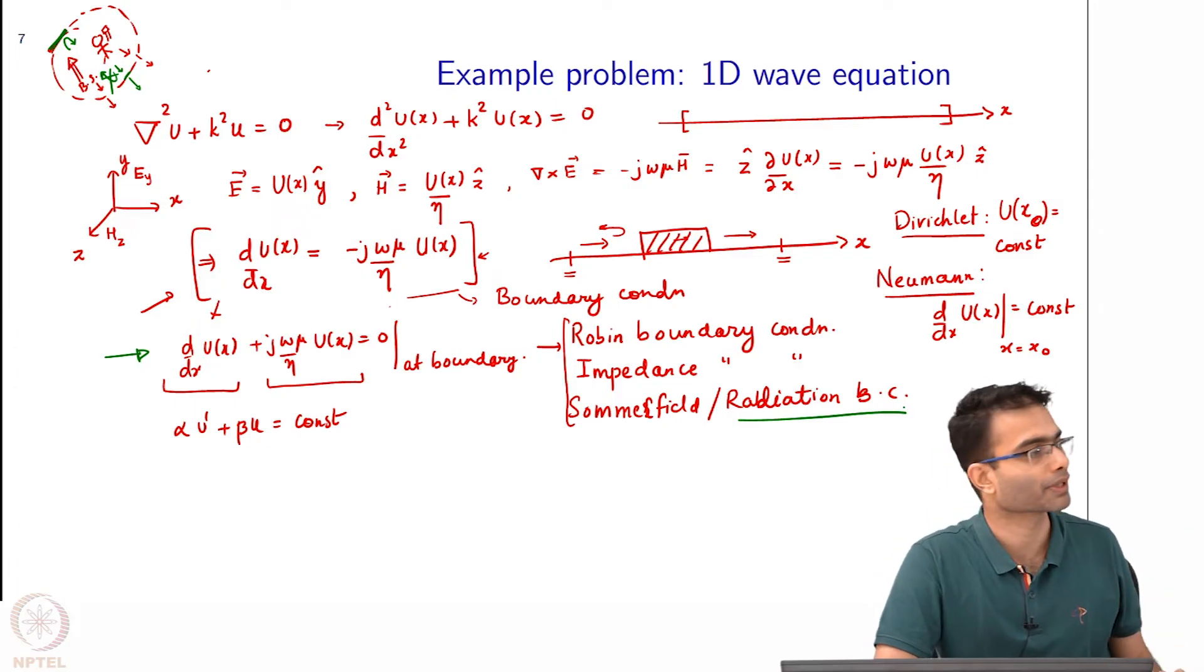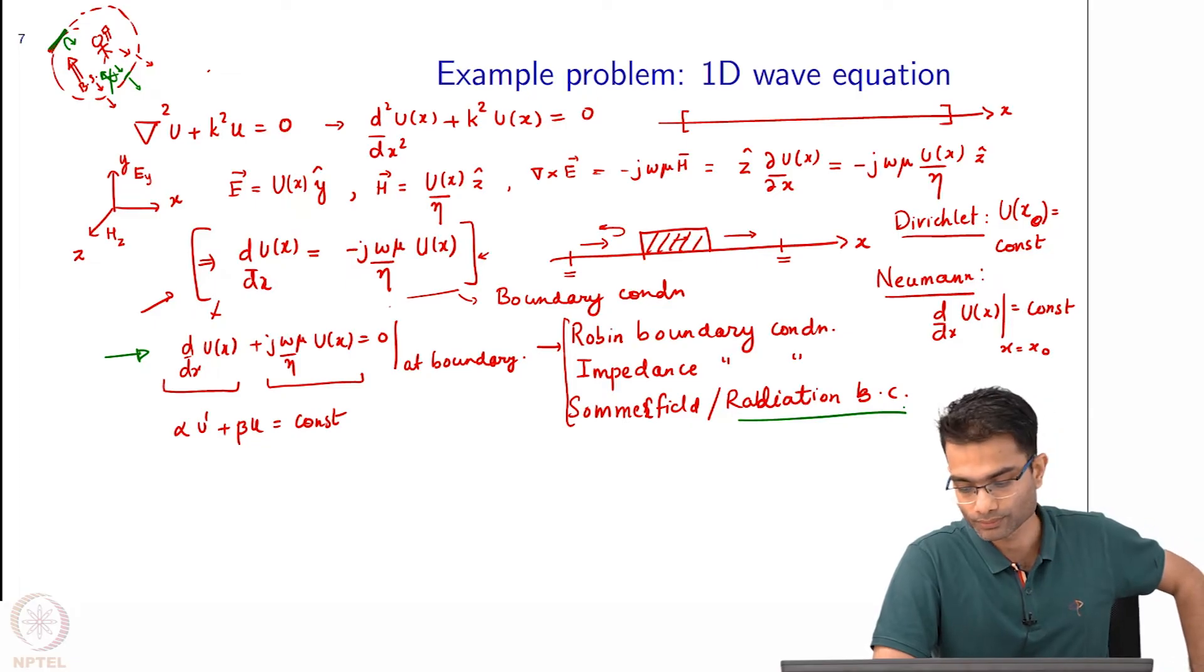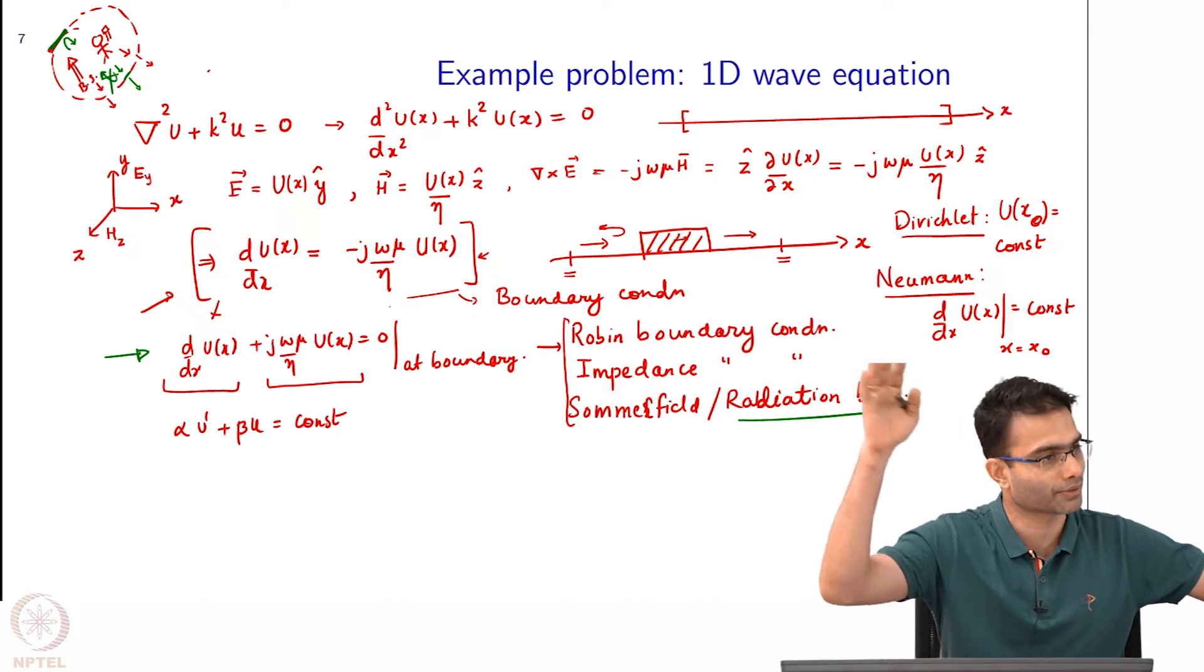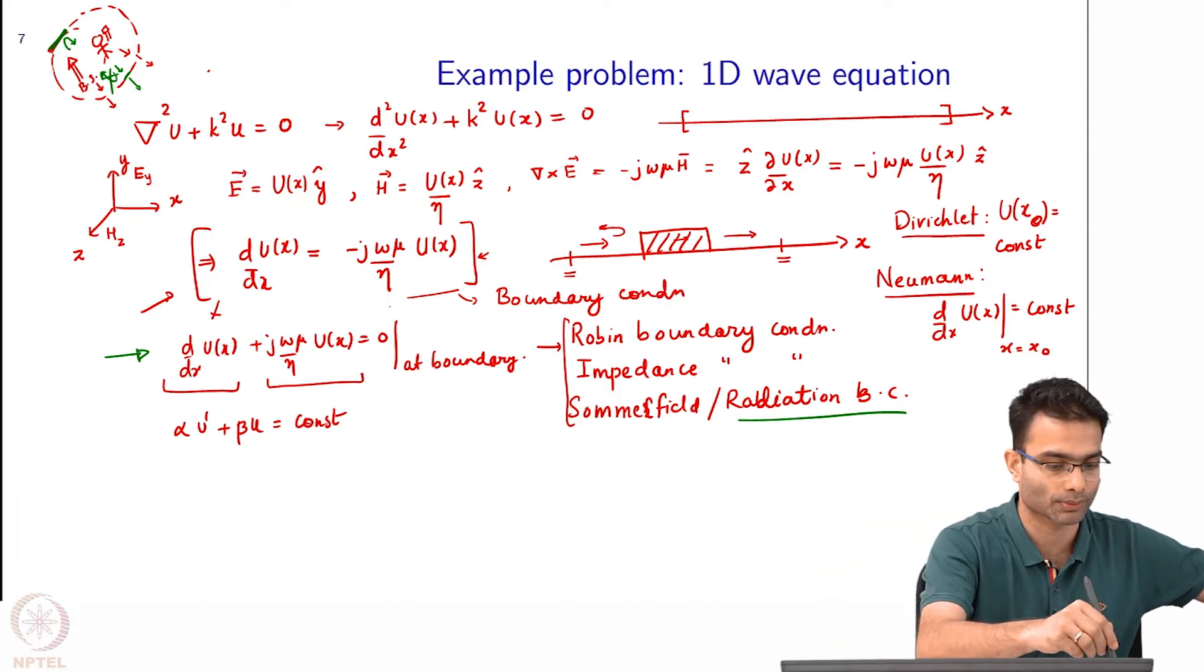For them this is a radiation boundary condition, meaning it is simulating a radiation that is going off to infinity. Circuits people call it impedance boundary condition for different reasons. But the physical interpretation is this: I do not want the field to come back from a hypothetical non-existent surface. This is the motivation we will carry to 1D, 2D, 3D, whatever how many ever dimensions we are solving the problem.